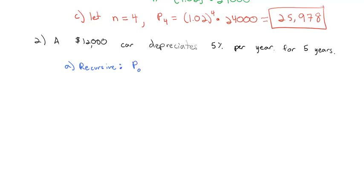Recursive formulas have two parts, the P sub 0 and the P sub n. P sub 0 is where it starts—a $12,000 car. And for P sub n, we've got the common ratio times the previous number.